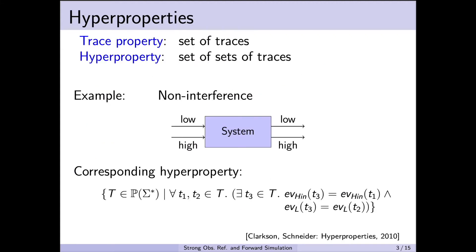Before getting into the details of strong observational refinement, let's first recap what hyperproperties are as defined by Clarkson and Schneider. The typical way to describe safety and liveness properties is using the traces of a system — a trace property is a set of traces. Clarkson and Schneider show that this is insufficient in the context of security, where we're actually interested in comparing different traces of the same system. So they define a hyperproperty as a set of sets of traces.